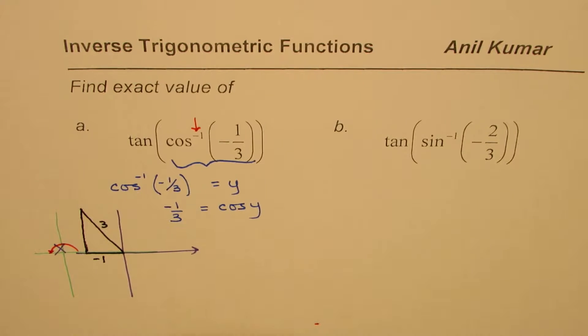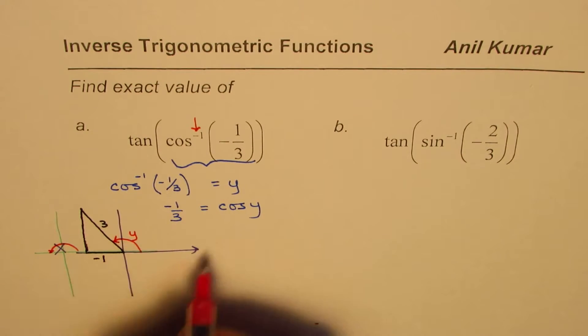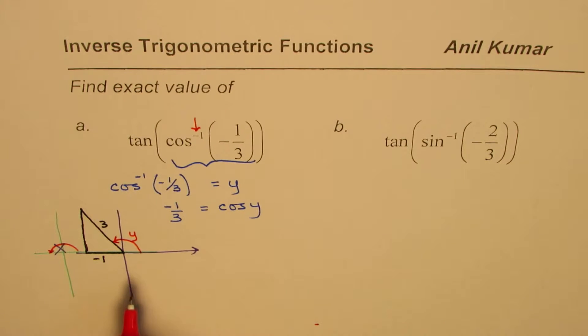So let's make a triangle which can show you. So that triangle helps. This is minus 1, and then hypotenuse is 3, where the angle y is this angle. So this is your angle y. I hope the picture is very clear.